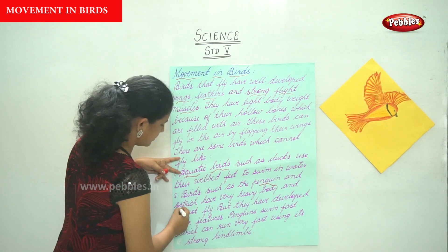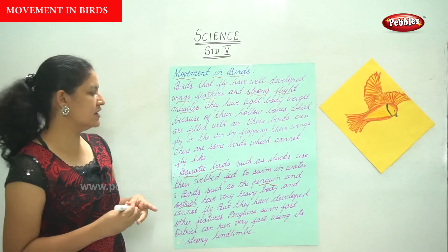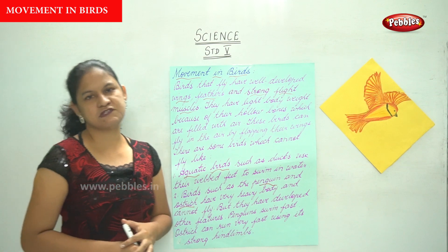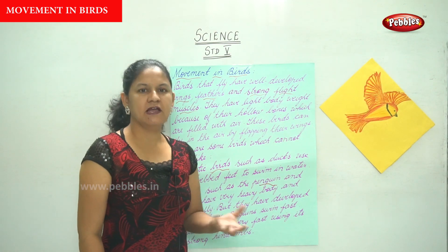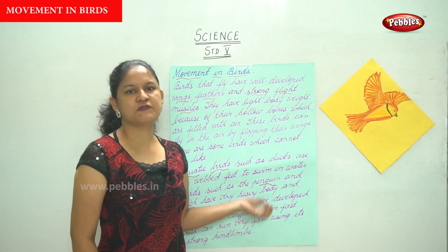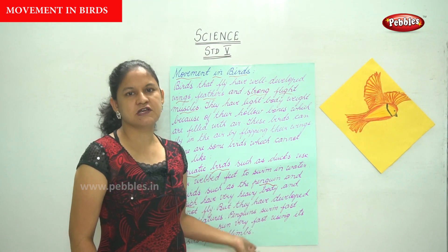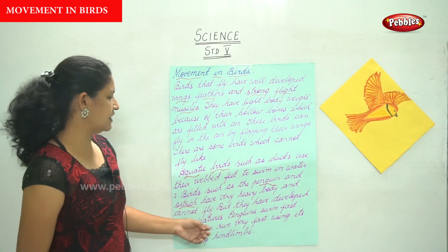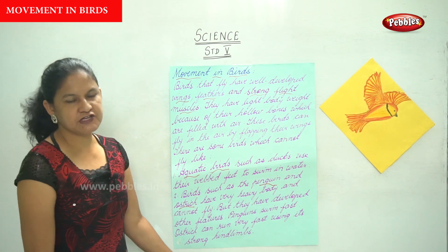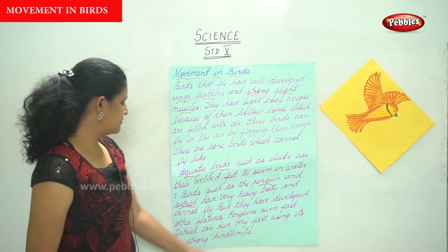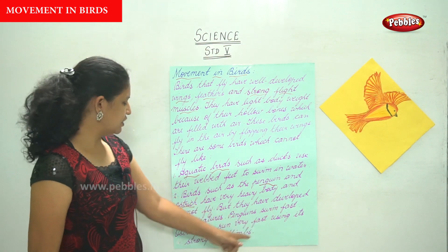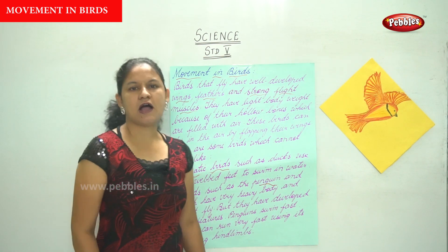Birds such as the penguin and ostrich have very heavy bodies and hence they cannot fly. Normally for a bird to fly its body weight has to be light, but in the case of the penguin and ostrich the body weight is very heavy. However, they have developed other features — penguins swim fast and ostriches can run very fast using their strong hind limbs.